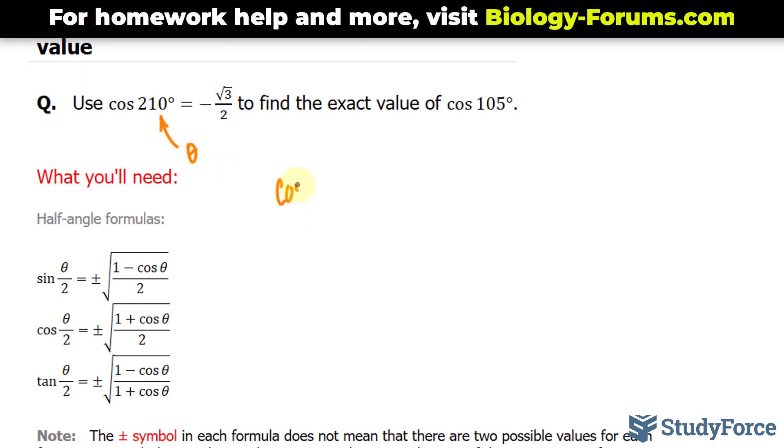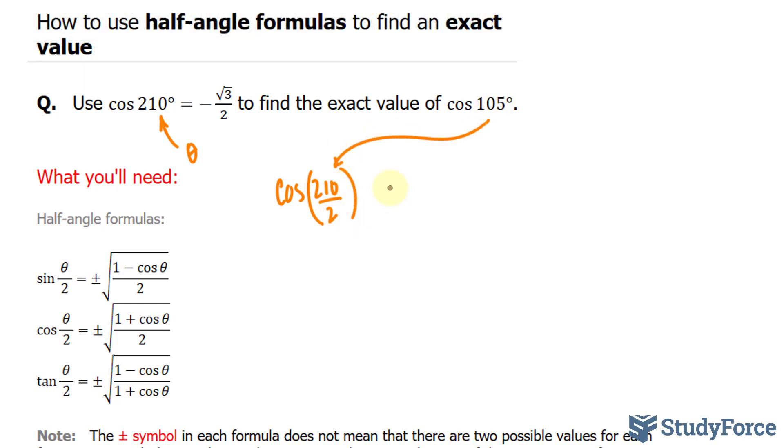So I have cosine of 210 over 2, which is equal to 105. That's equal to... and since this is a negative ratio, we have to choose the negative.